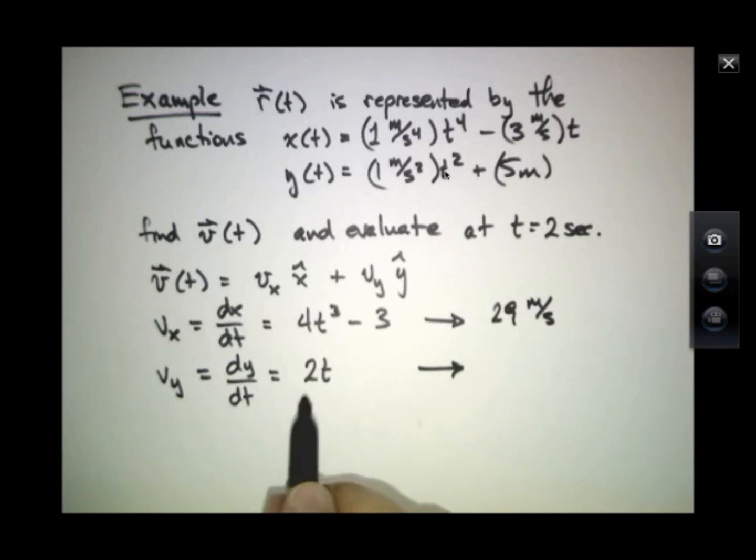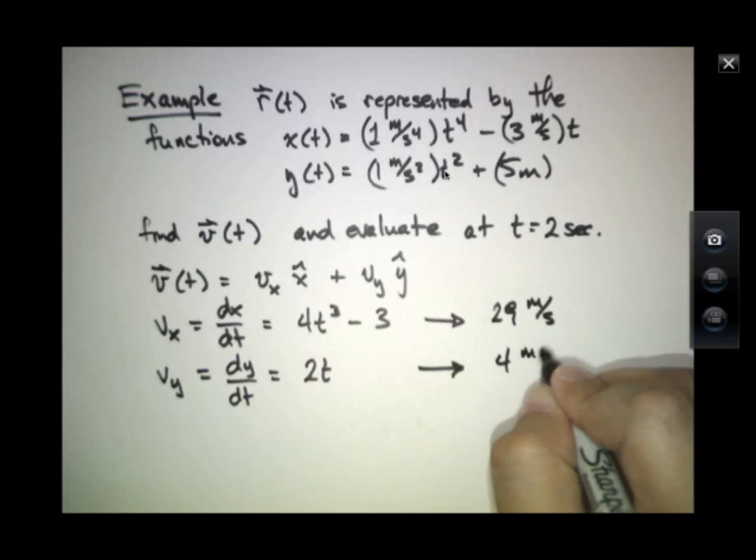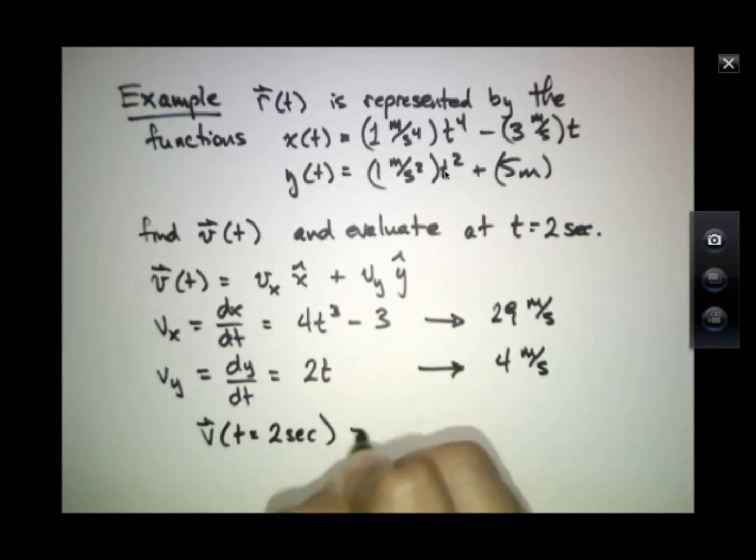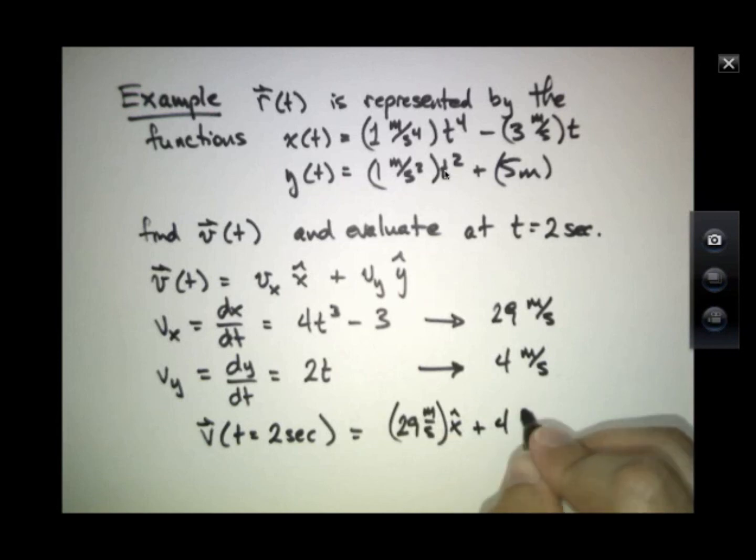And vy, when I plug in 2 seconds, has a value of 4 meters per second. v at 2 seconds is 29 meters per second x hat plus 4 meters per second. That would be the answer.